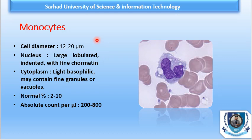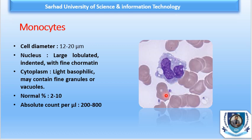The monocyte is a large cell, 12 to 20 microns, with a large lobulated, indented nucleus and fine chromatin containing vacuoles. It has fine granules and light basophilic cytoplasm. Its normal count is 2 to 10 percent and the absolute count per microlitre is 200 to 800 cells.